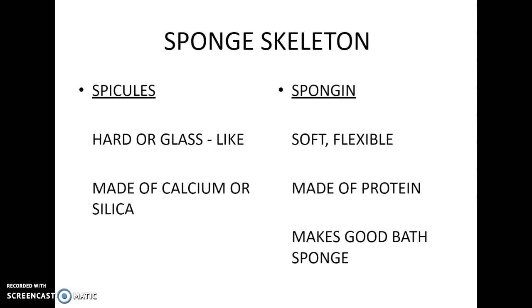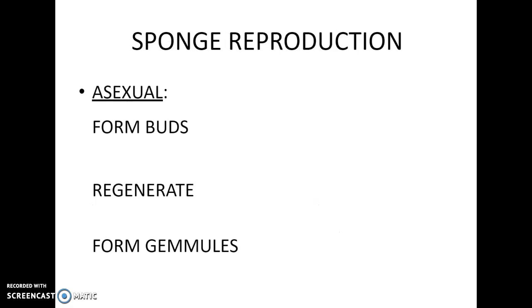Number fifteen: a good bath sponge should have a skeleton of spongin. If you use the sponge with spicules, you're going to get a little more exfoliation than you'd probably care for. Number sixteen: sponges reproduce asexually by forming buds — it grows another being off the side of its body, and when it's big enough it breaks off and goes off on its own. D is a bud on your diagram.